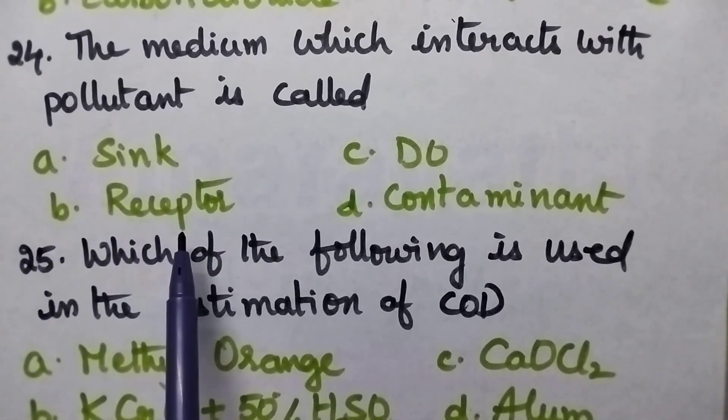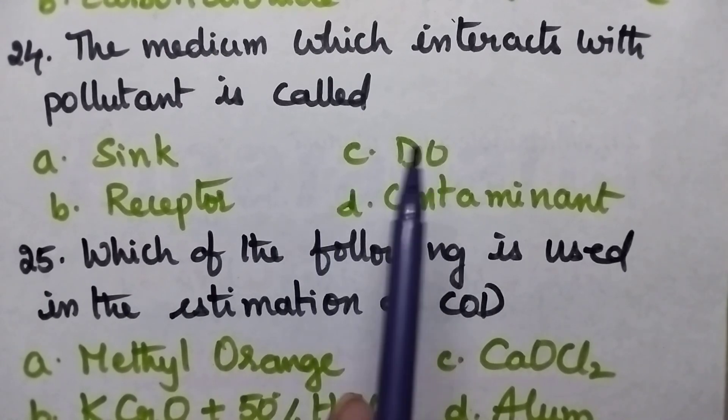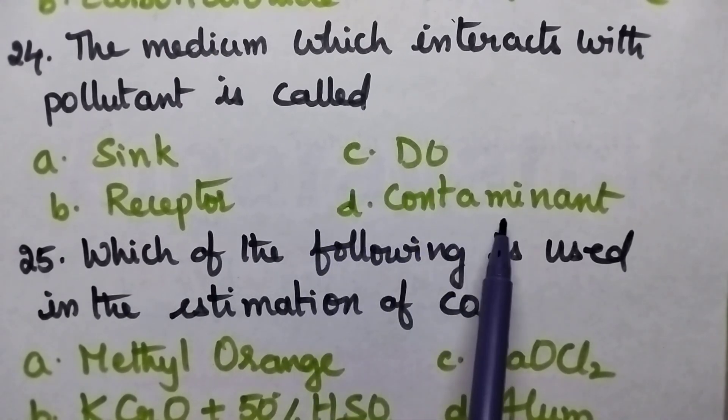The medium which interacts with pollutant is called A: Sink, B: Receptor, C: DO, D: Contaminant.